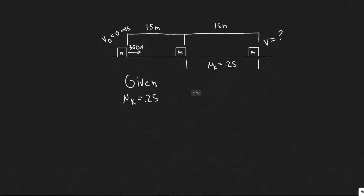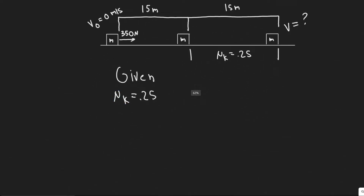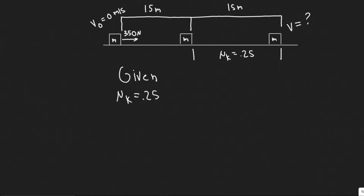We're given mu sub k, the coefficient of kinetic friction, which is 0.25. We're also given the mass, which is 96 kilograms. Now let's talk about how we're going to solve this problem.